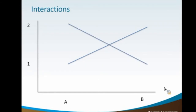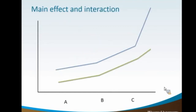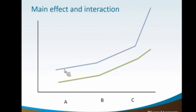Here's an example of both a main effect and an interaction together. You can see throughout this graph there is a main effect — a consistent difference between the blue line and the green line across three data points. But the difference is quite a bit bigger with variable C than it was with A and B, which is an example of both a main effect and an interaction occurring simultaneously.